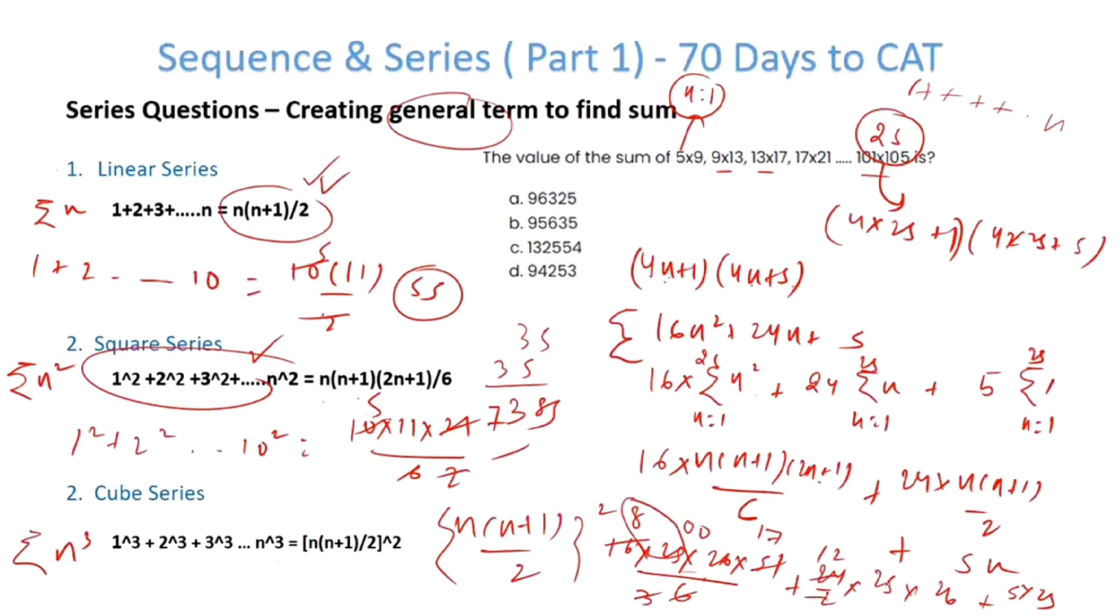12×25×26 will also have two zeros. So the last two digits must come from here: 5×25. Last two digits must be 25. The answer is option A.